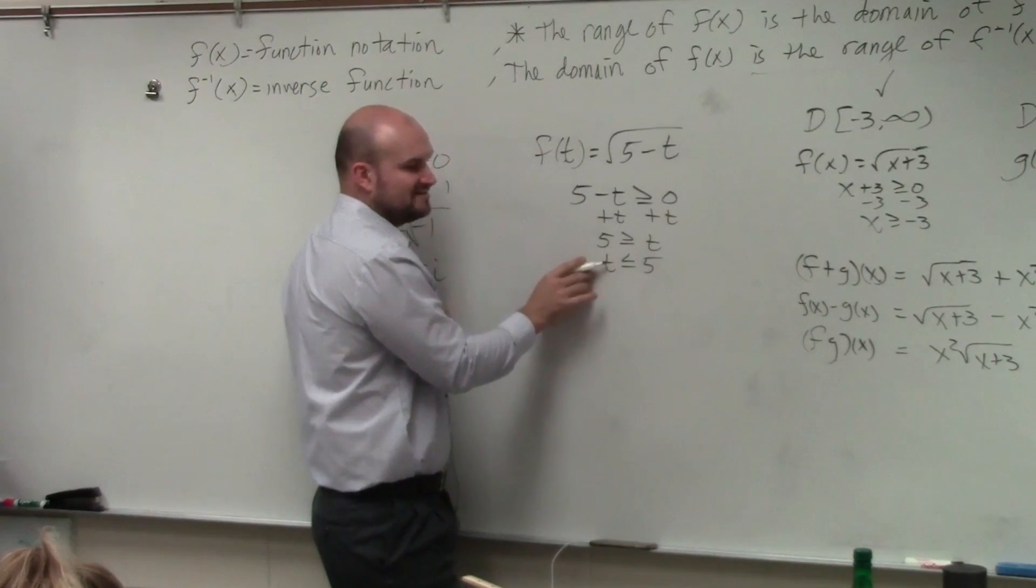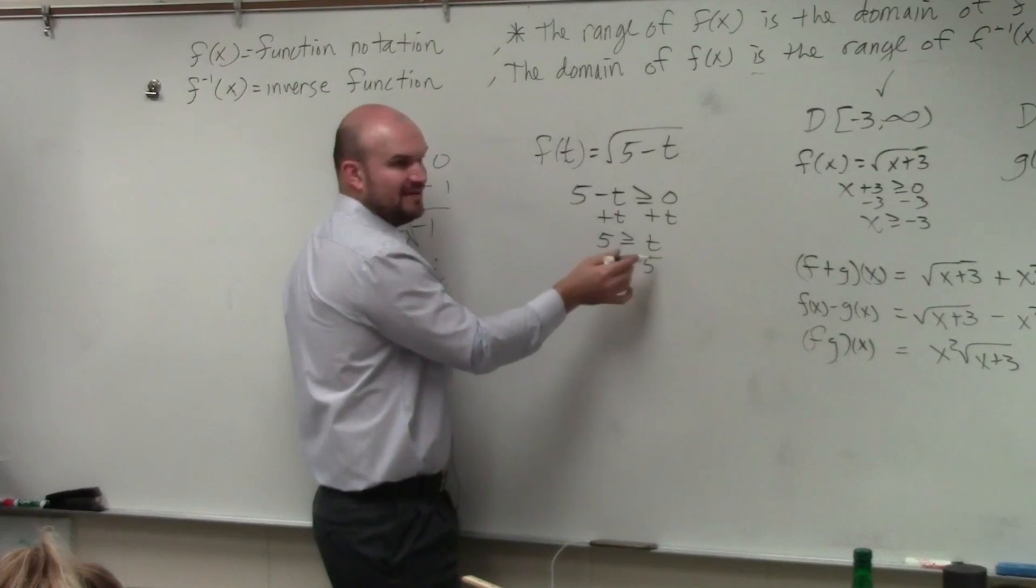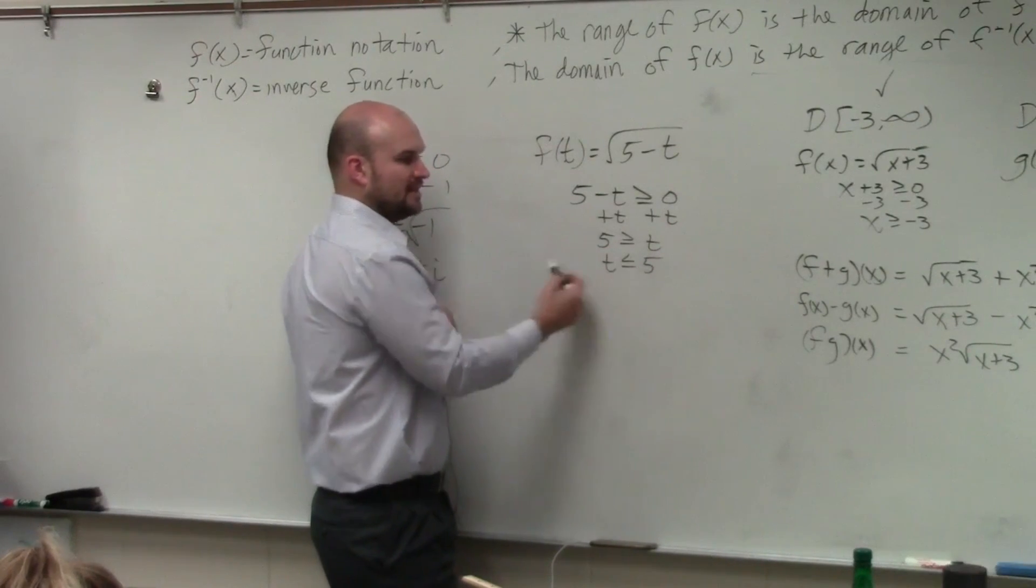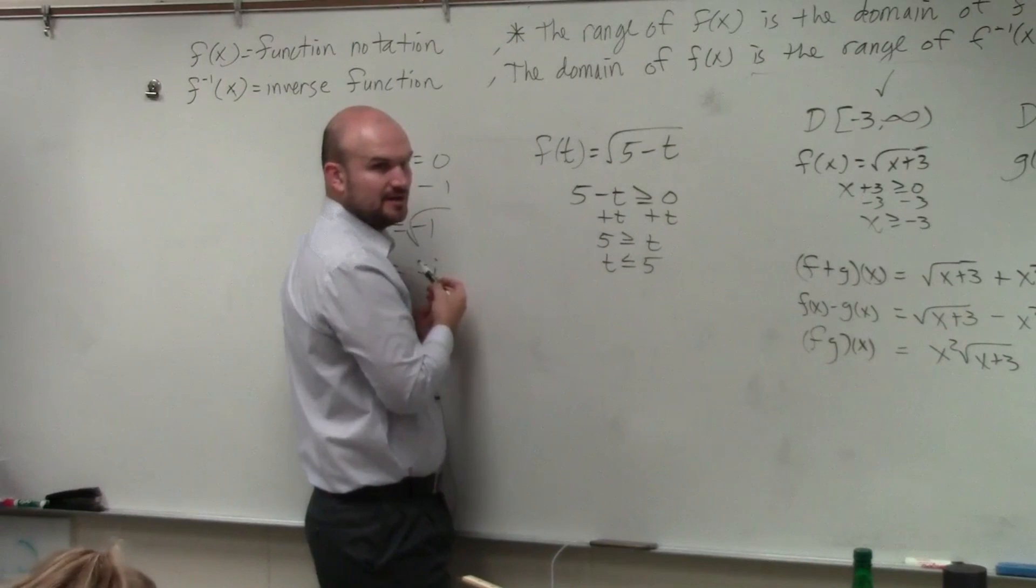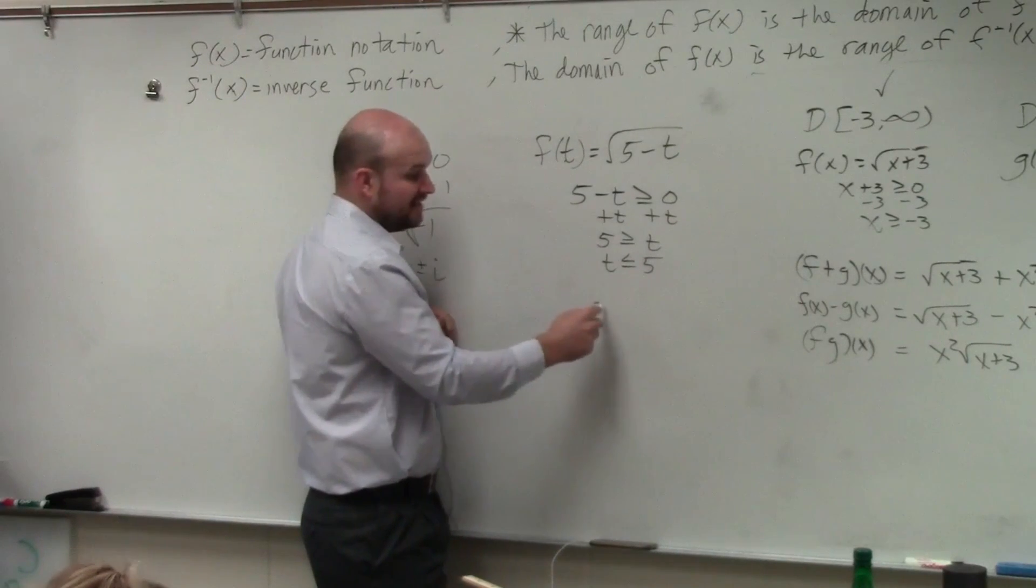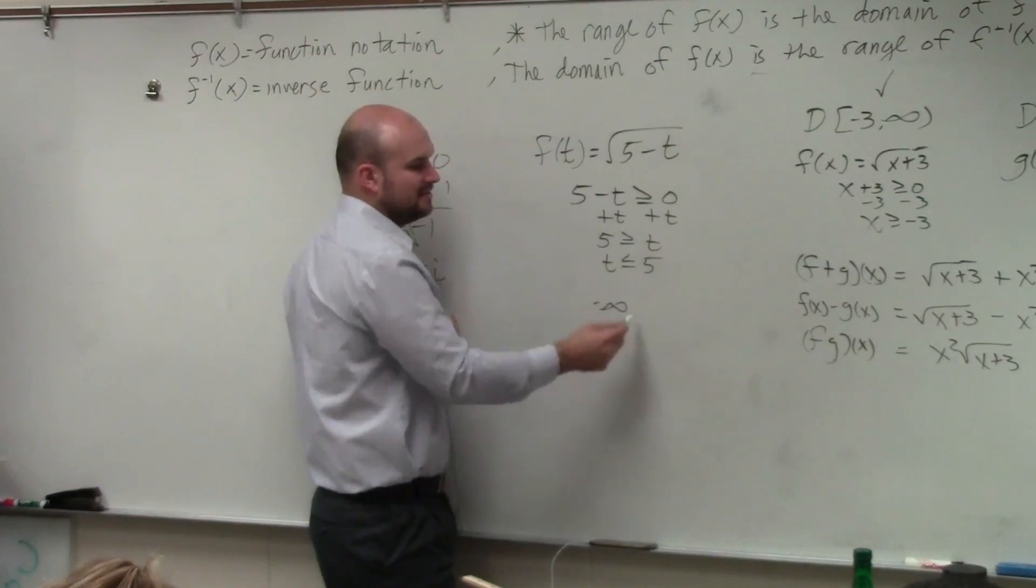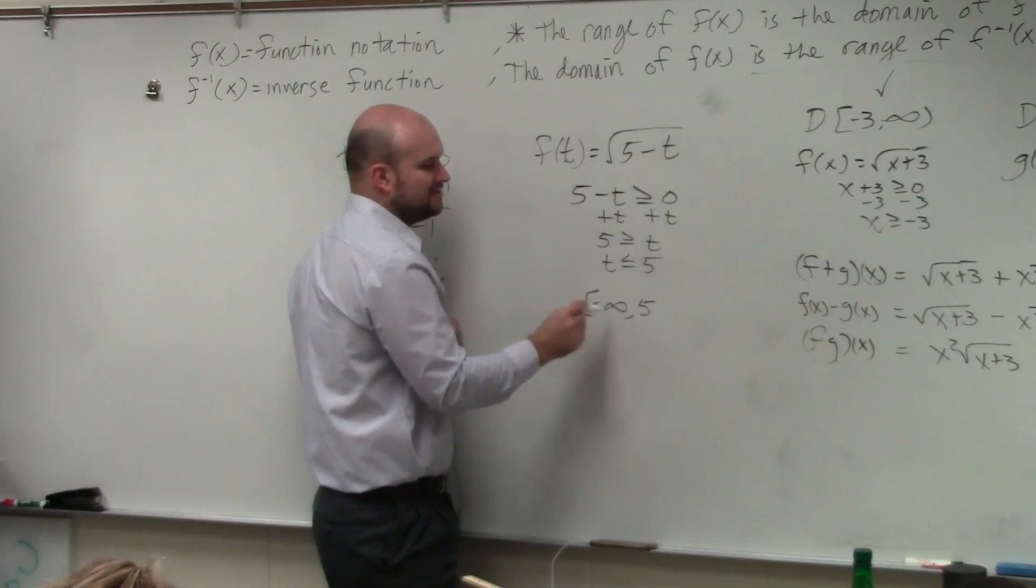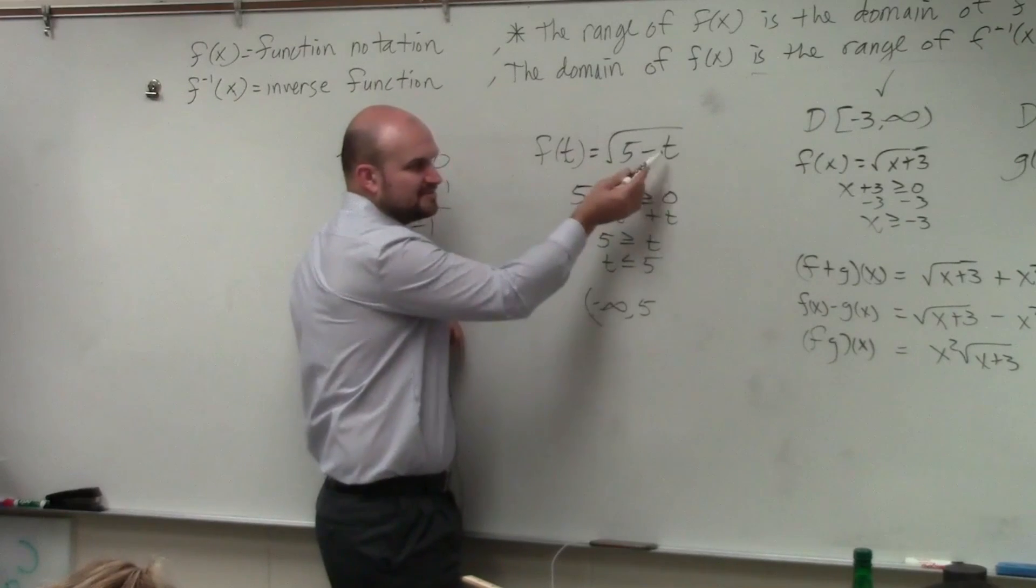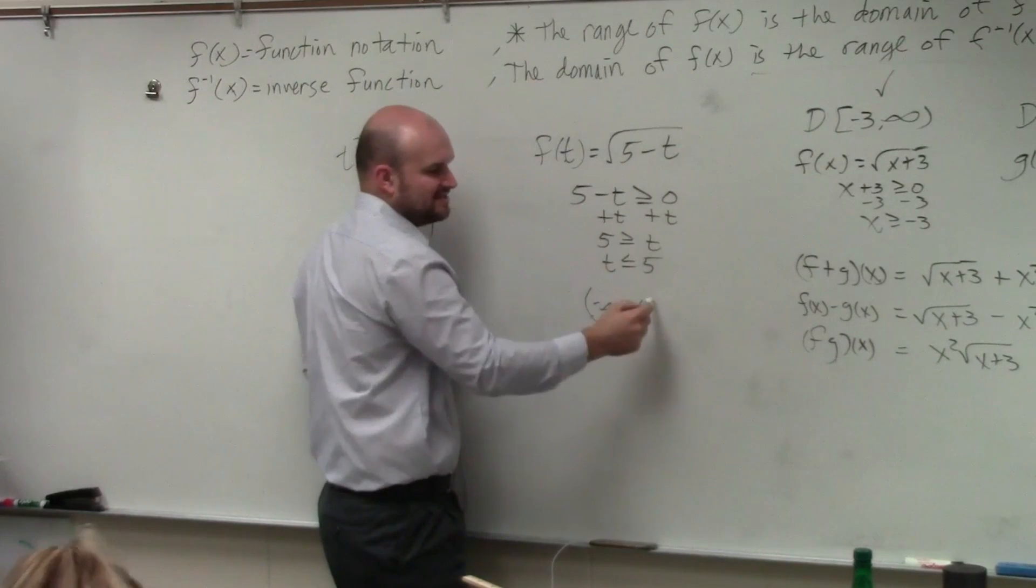So, all values of t have to be less than or equal to 5. So, how far less than can we go? Negative infinity. And then the highest value we can get to has to be 5. And then can we use, that can't be included. Can 5 be in the answer? Yes, because if you put 5 in for t, that's 0. That's fine.